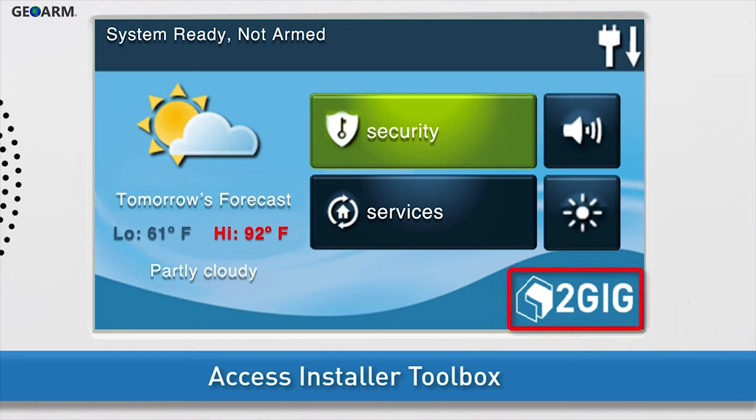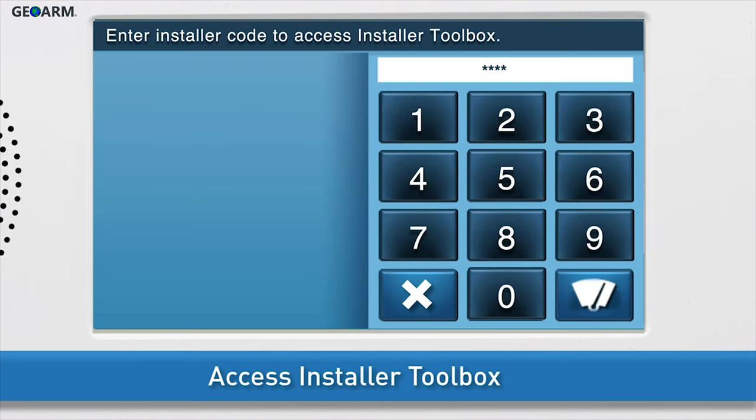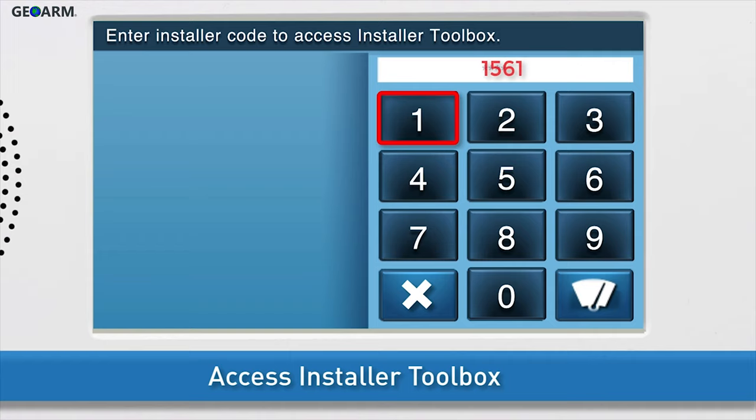Press the 2GIG logo on your GC2 panel's screen. Enter the installer code. The default installer code for the GC2 is 1, 5, 6, 1.